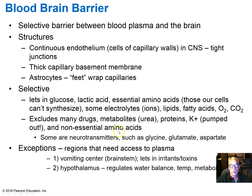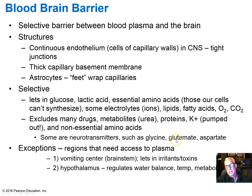There's an unimaginable number of action potentials happening in the brain at all times. Non-essential amino acids are not allowed to pass through the blood-brain barrier because they are the most prevalent neurotransmitters — glycine, an inhibitory neurotransmitter in the spinal cord; glutamate, an excitatory neurotransmitter in the brain. These can't be allowed to simply diffuse from the blood into the cerebrospinal fluid and short-circuit the synapses where they serve as neurotransmitters.